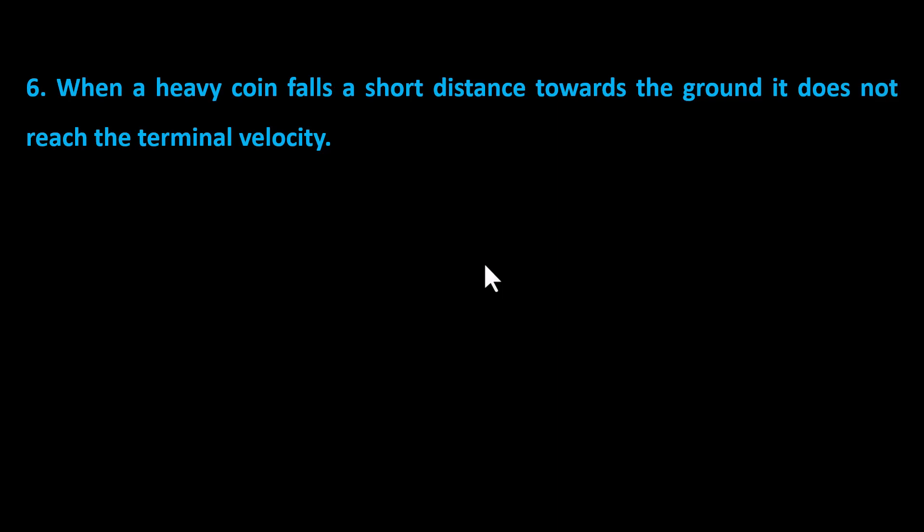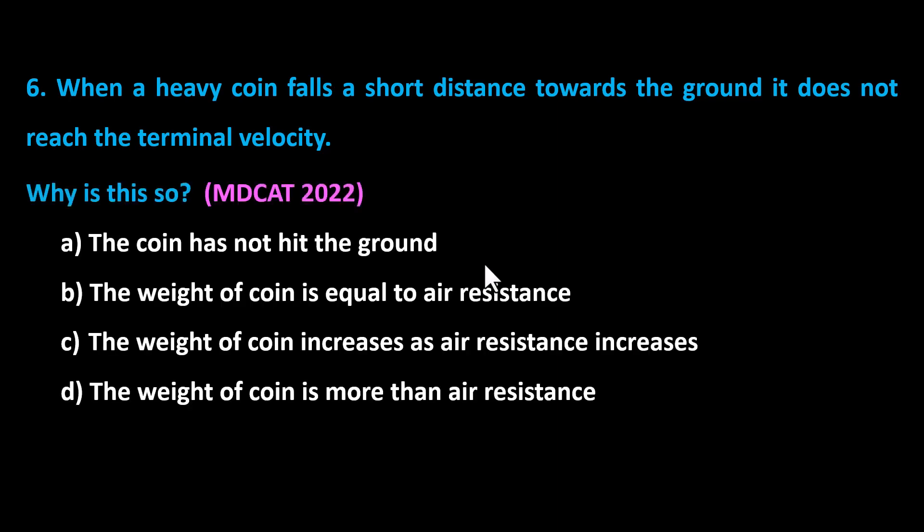When a heavy coin falls a short distance towards the ground, it does not reach the terminal velocity. Why is this so?